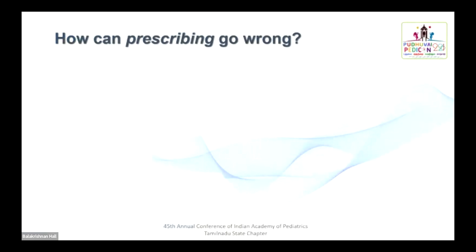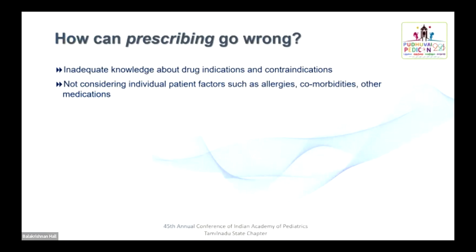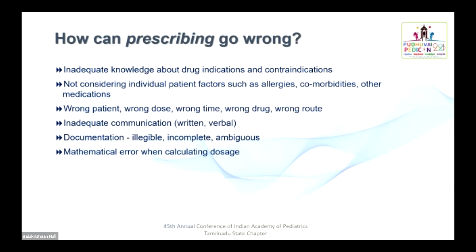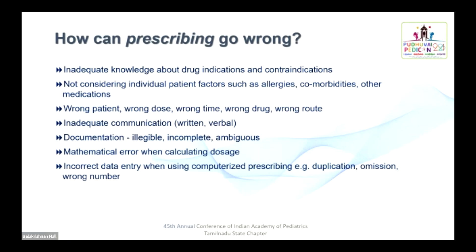How can prescribing go wrong? Inadequate knowledge about drug indication and contraindication, not considering individual patient factors such as allergies, existing comorbidities like renal or liver insufficiency, and simultaneous drug administration. Wrong patient, wrong dose, wrong time, wrong drug, and wrong route. Inadequate communication to parents in written and verbal form. Illegible, incomplete, and ambiguous documentation of prescriptions, and mathematical errors during dose calculation. If using computerized prescription, incorrect data entry can still occur in the form of duplication, omission, and wrong numbers.